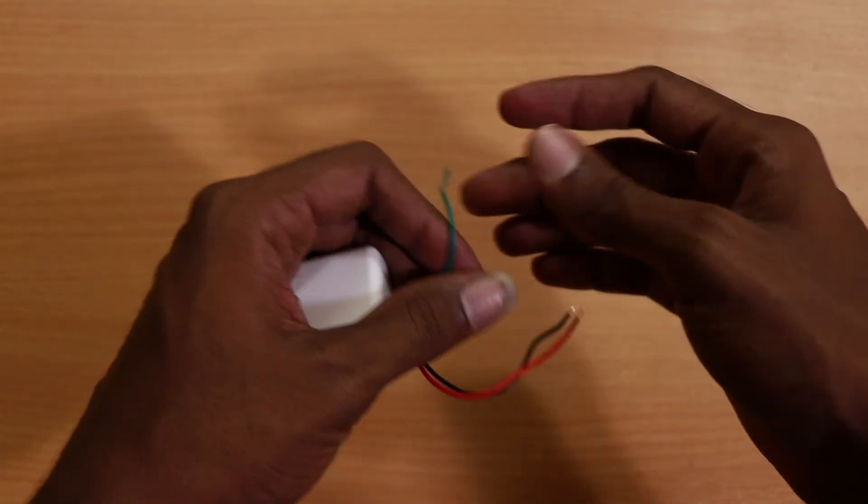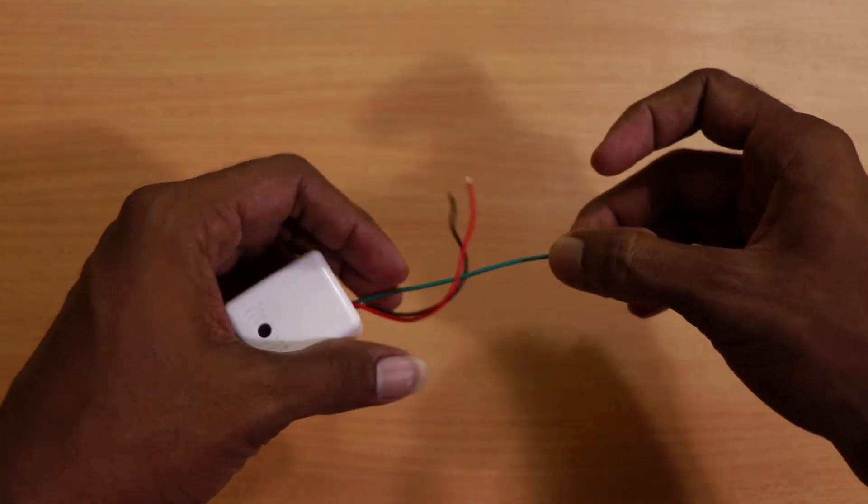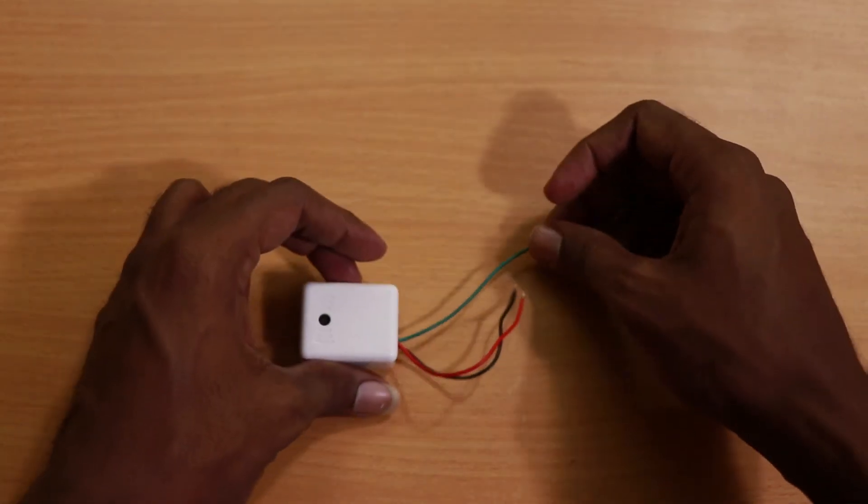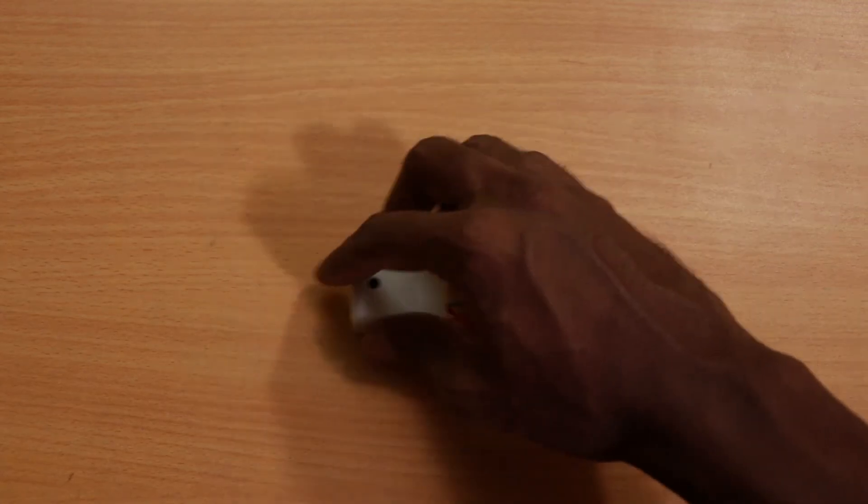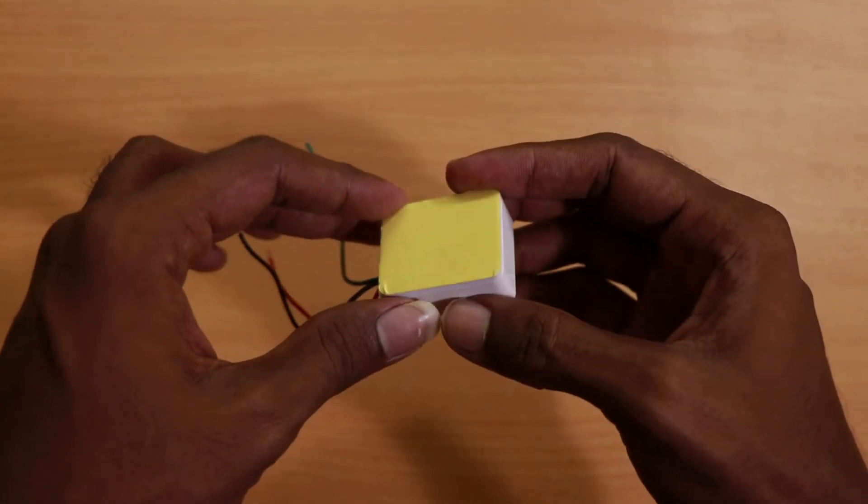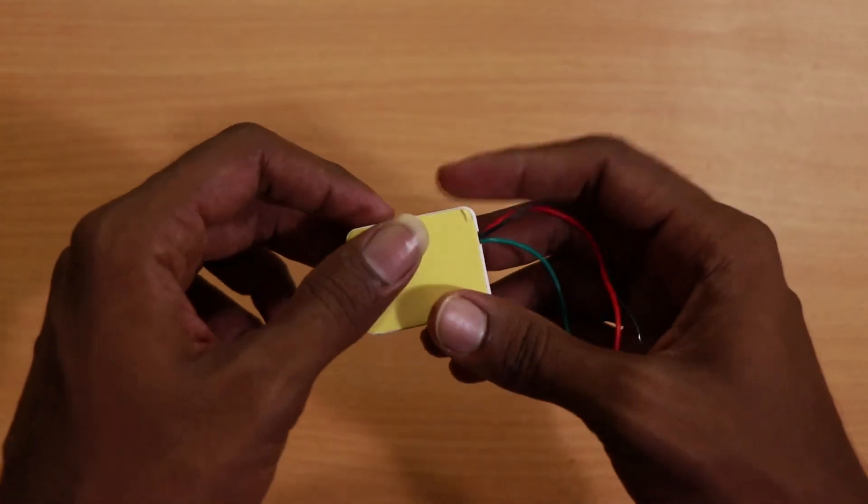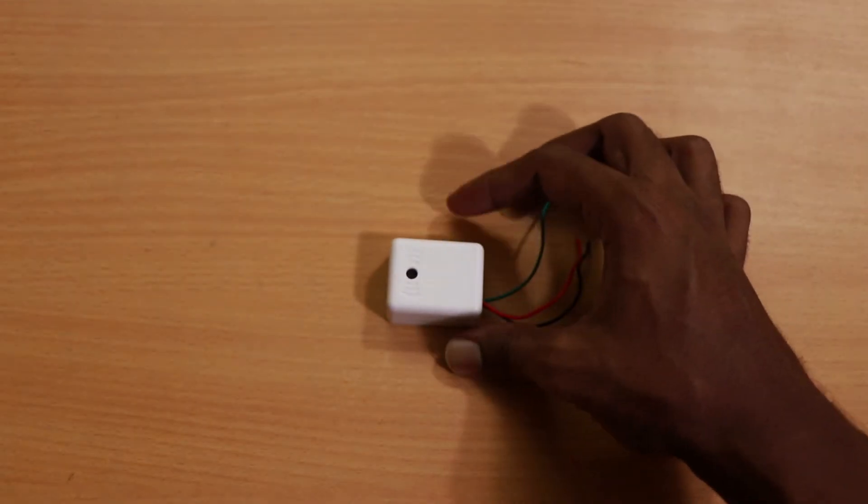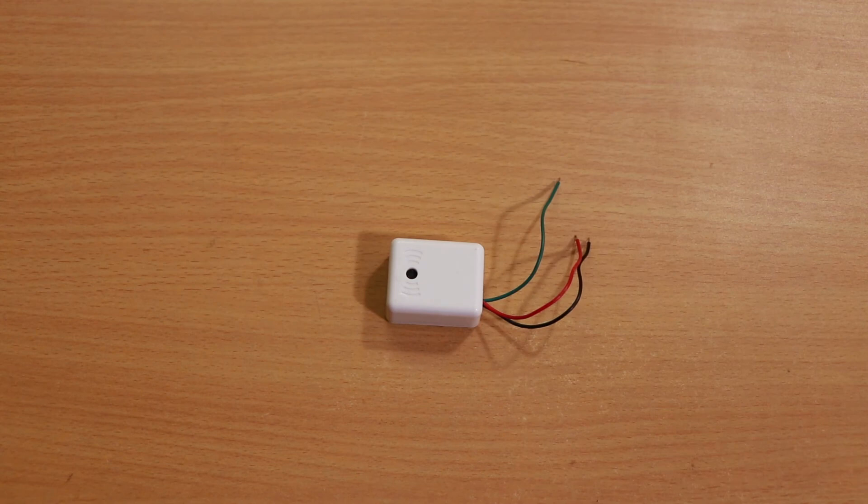Two for power, and this one is for audio input or audio output from the mic to the DVR. And we have a double-sided tape at the back. Peel this off and place it - it's easy as that. Thank you guys for watching.